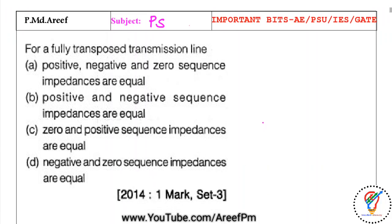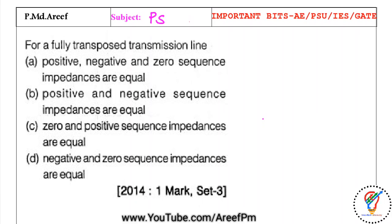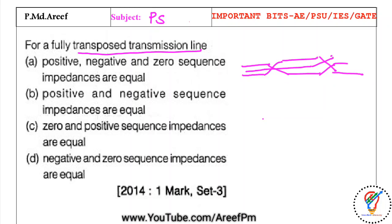The next question is from Gate 2014, set 3, one-mark. For a fully transposed transmission line — meaning conductors change their positions through transposition — the positive sequence reactance X1 and negative sequence reactance X2 are both equal. So option B is the right answer for this question.